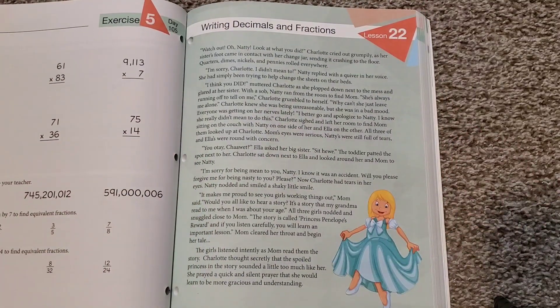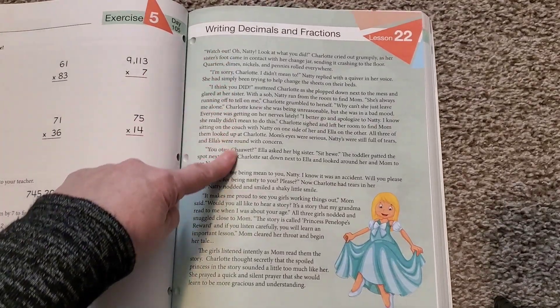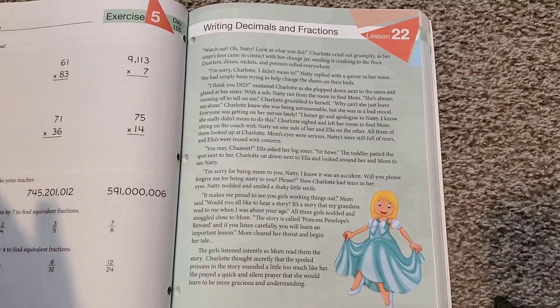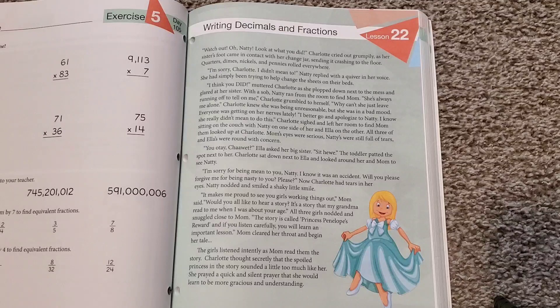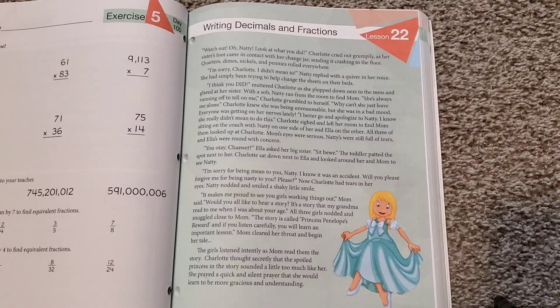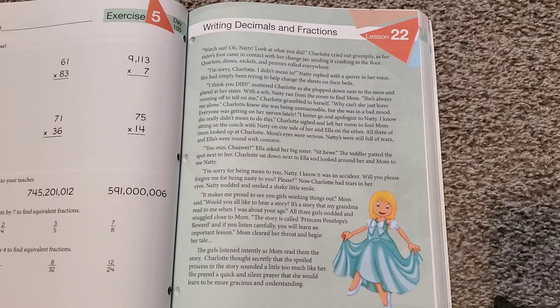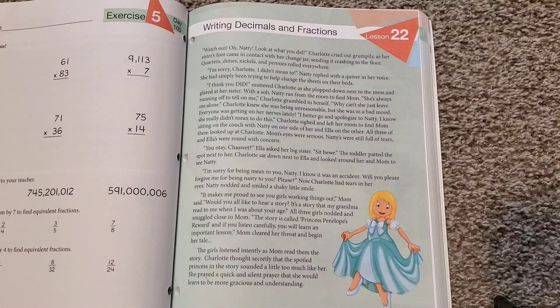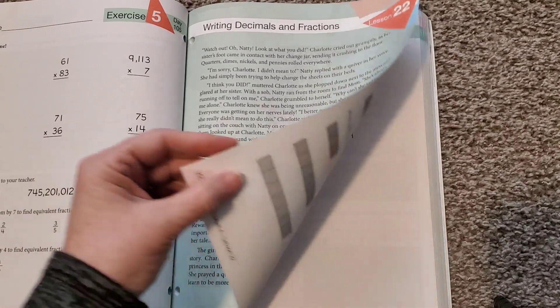Here we go. So writing decimals and fractions. This is Lesson 22. So it starts out with a story, which makes it a whole lot of fun. It's really fun. You get to listen to the story. And it's about these two children. And it just kind of follows their life and what is going on. They travel different places. They do different things. They go on field trips. But they always bring math into it. So it makes it really fun putting math into real life.